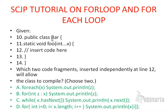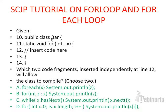Next option: for (int z : x) { System.out.println z; }. This option is valid. Since x is an array holding multiple values, we can use a for-each loop in Java to iterate through each value in the array. For each iteration, we name each value z and print it with System.out.println z. So option B is correct.